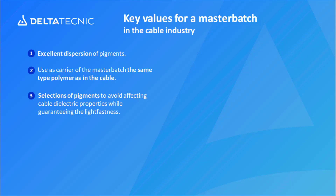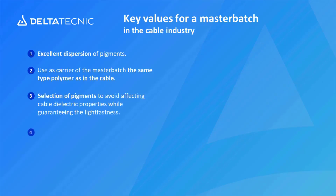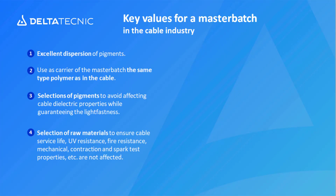Point four: a selection of raw materials to ensure cable service life — UV resistance, fire resistance, mechanical characteristics, contraction, or spark test properties. All those characteristics must not be affected, and this depends on the formulation of the masterbatch.